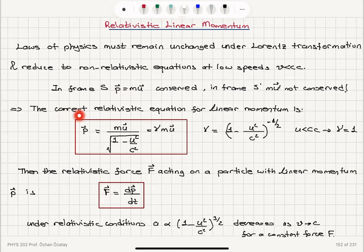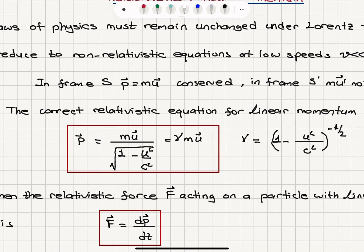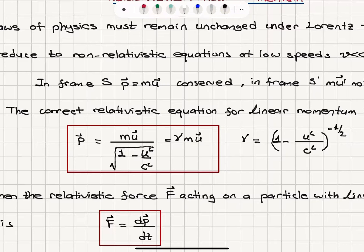The correct relativistic equation for linear momentum is gamma times mu, or mu over the square root of 1 minus u squared over c squared. With this expression, we do have conservation of linear momentum, and this gamma factor equals 1 at very low speeds, recovering the classical result.